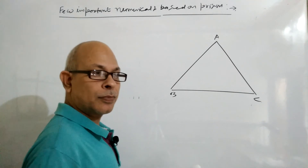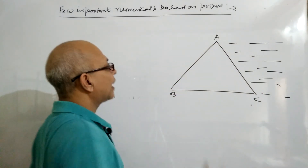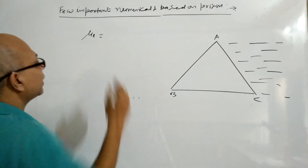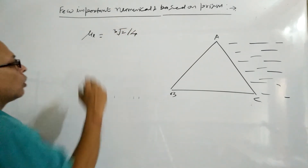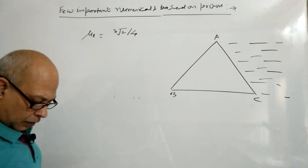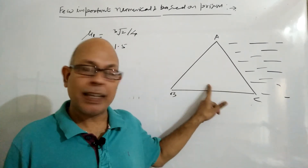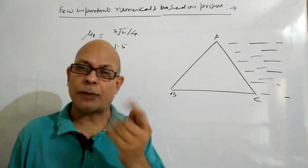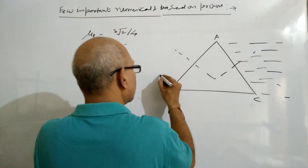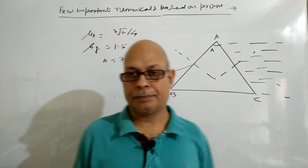ABC is the prism. This side is covered with the liquid at the clear face. The refractive index of the liquid is 3√2/4, while the refractive index of the glass, meaning the prism, is 1.5. The angle of the prism is given as 75 degrees.